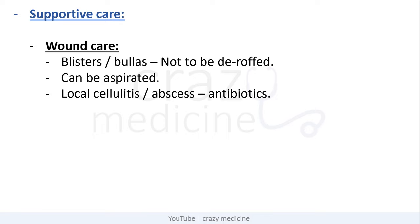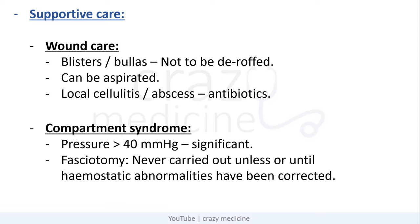For wound care, if there are blisters or bullae, they should not be de-roofed — they should only be aspirated. If there is evidence of local cellulitis or abscess, antibiotics can be used. For compartment syndrome, if the pressure of the compartment exceeds 40 mmHg it is significant. Remember, fasciotomy should never be carried out unless or until hemostatic abnormalities have been corrected.